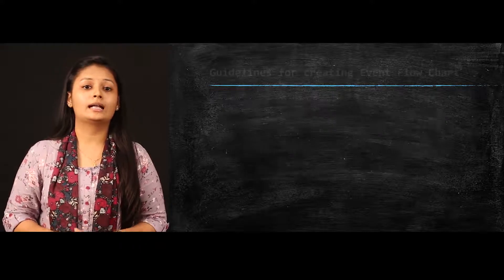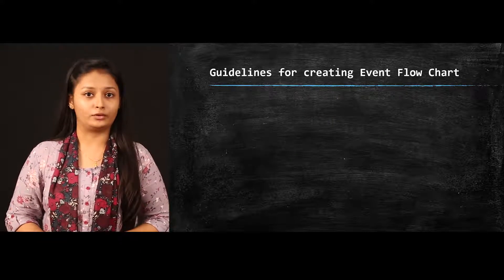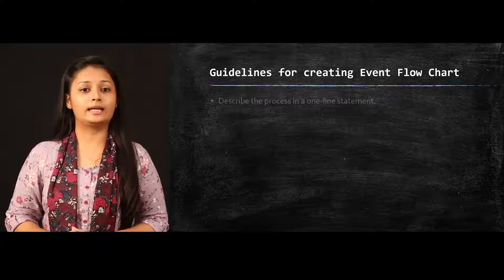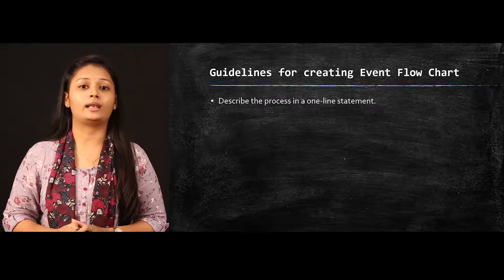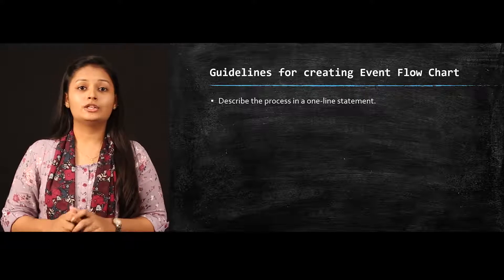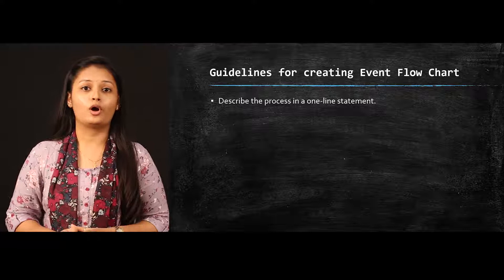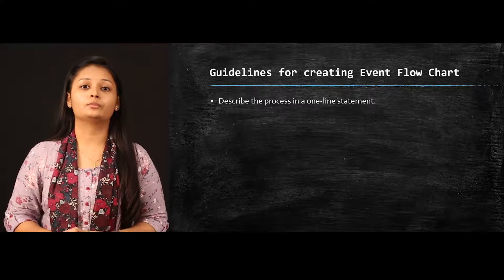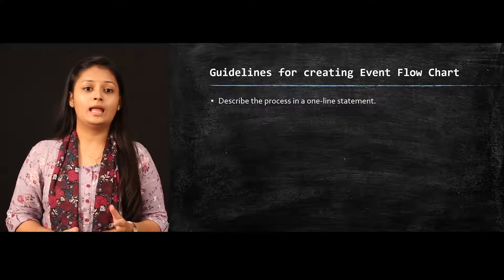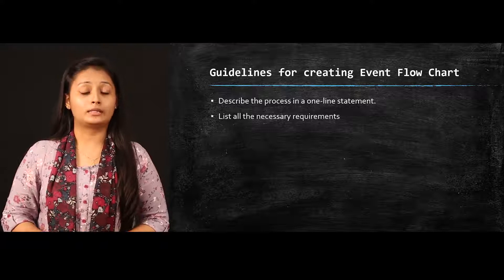Next we move on to the guidelines for creating the event flowchart. First guideline is describe the process in a one-line statement. You need to be precise, just write a short form or short text or keep it a short symbol of the particular activity which you are going to perform in the event. List all necessary requirements.